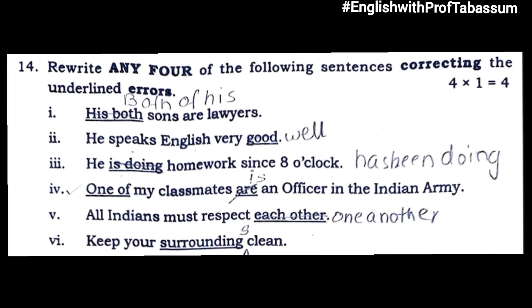Bit number fourteen: rewrite any four of the following sentences correcting the underlined errors. 'His both sons are lawyers' — correct: 'Both of his sons are lawyers.' 'He speaks English very good' — correct: 'He speaks English very well.' 'He is doing homework since 8 o'clock' — correct: 'He has been doing homework since 8 o'clock.' 'One of my classmates are an officer in the Indian army' — correct: 'One of my classmates is an officer in the Indian army.' 'All Indians must respect each other' — correct: 'All Indians must respect one another.'